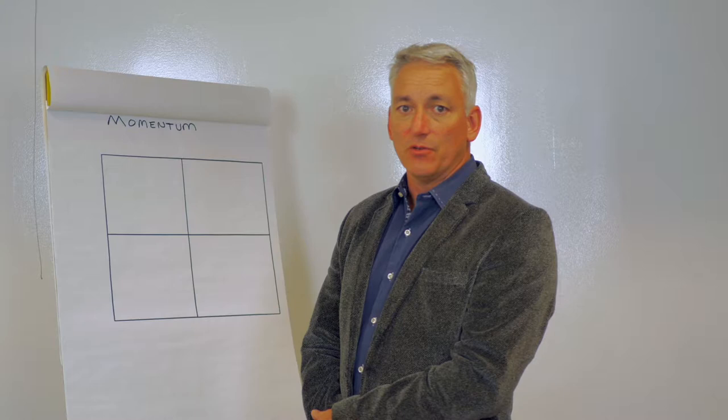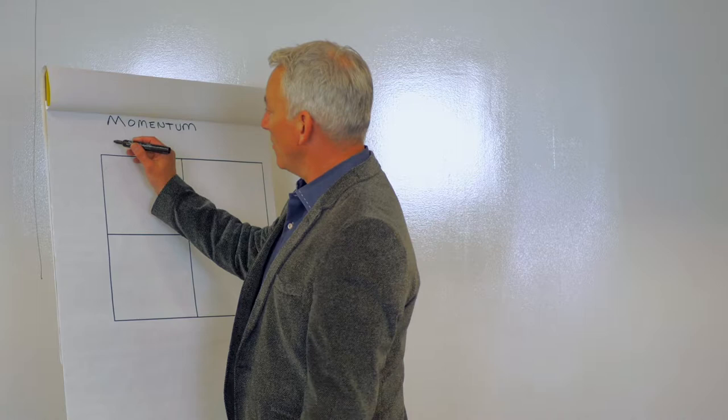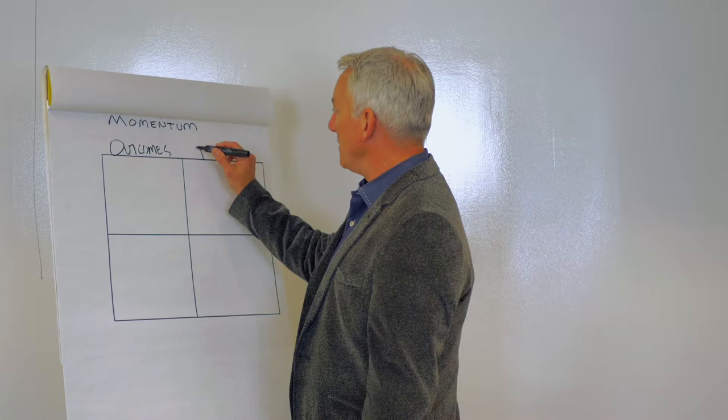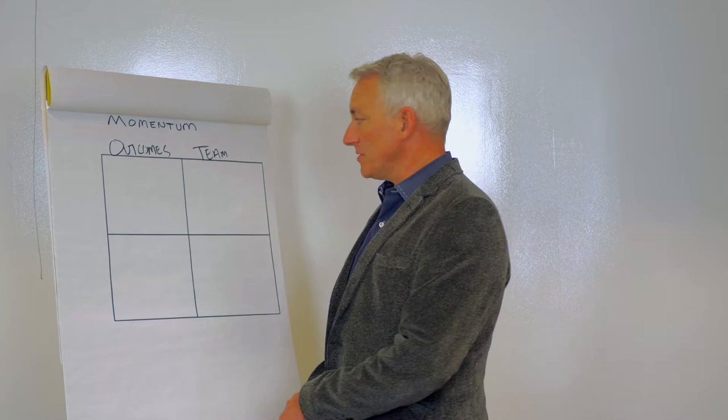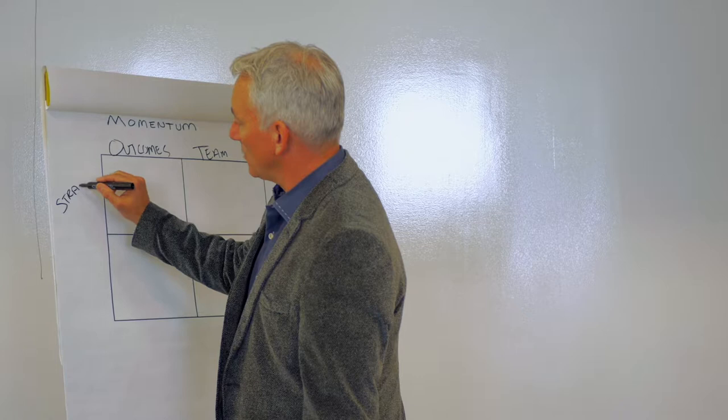I've come up with a formula — we call it the momentum formula — that we use to get these things done. If you think about this as swim lanes, over here we have these outcomes, these things that we want to accomplish. Over here we have the team that we need to motivate, the people that we want to help us accomplish those outcomes. It's a four-quadrant model.